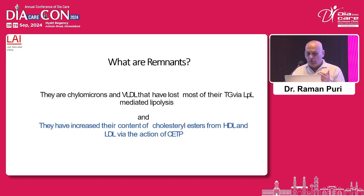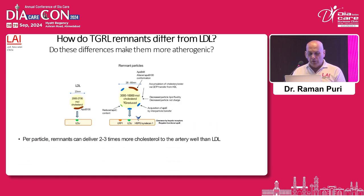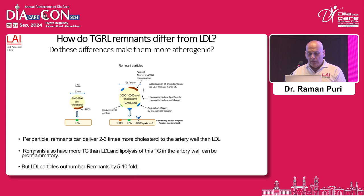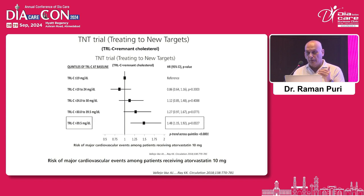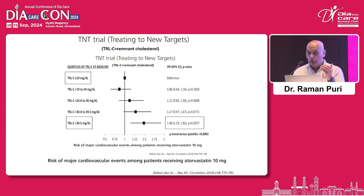Remnant cholesterol — I have already discussed what it is. In the TNT trial, it was found that if remnant cholesterol is more than 39, there is a 48% increase in events compared to those with remnant cholesterol less than 19 mg. This is independent of LDL cholesterol and adds to its risk.